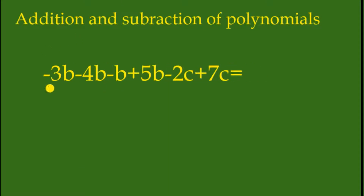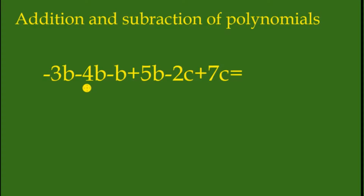In this example we have negative 3b, negative 4b, negative b, positive 5b, negative 2c, positive 7c. We have like terms b, b, b, and b. So negative 3 and negative 4 is negative 7b, and negative 1b makes negative 8b. Then negative 8b and positive 5b...